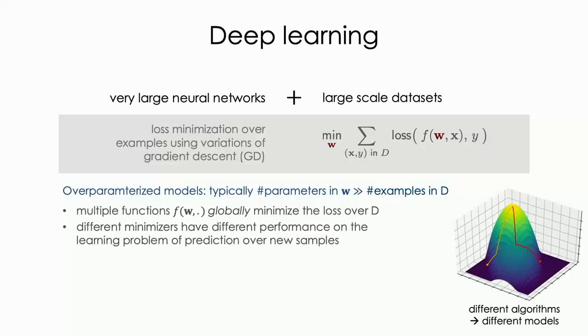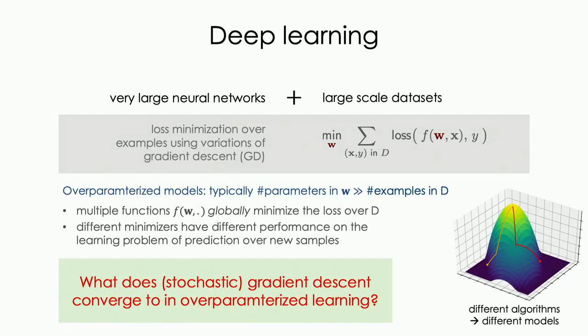The current picture to keep in mind is we have a loss landscape with multiple minimizers, and different algorithms used to optimize this objective will take us to different minimizers. As a consequence, they lead to different models. Unlike classical optimization where the objective is well-posed, now we also have to care about which algorithm we use. The algorithm matters not just for computational reasons, but also for learning-related reasons — to understand what inductive bias the algorithm introduces.